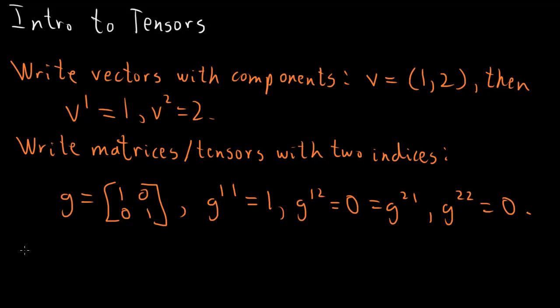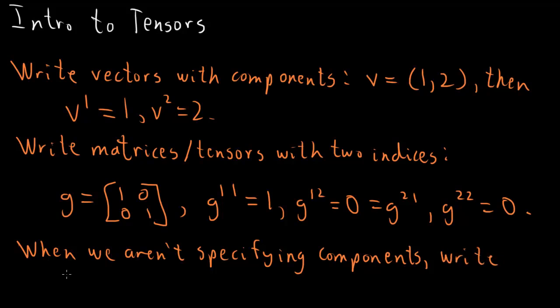And then when we don't want to specify a particular component, when we aren't specifying the specific components but talking about the object itself, like the vector or the metric, we will write the name of it, the letter, and then write Greek indices for the two, the one or two places where the numbers would go. So this would be like, we'll write the vector V as V with the Greek letter mu up top, or we'll write G with the Greek letter mu, and then a nu up top.